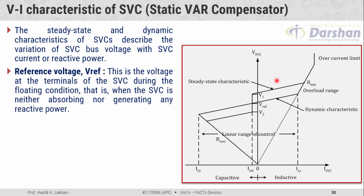The first point in the VI characteristic is the reference voltage, denoted by V_reference. This is the voltage at the terminals of the SVC during the floating condition, meaning the static volt ampere reactive compensator is neither absorbing nor generating any reactive power. When the SVC is connected to the line, V_reference is the rated voltage of the line at the point of connection, and it is also considered as the voltage across SVC when it does not absorb or inject any reactive power into the system.